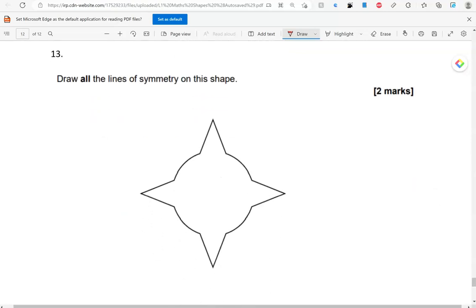Draw all the lines of symmetry on this shape. That would be one. That's another one. Another one here. And then a fourth one as well. And that's the end of the questions.